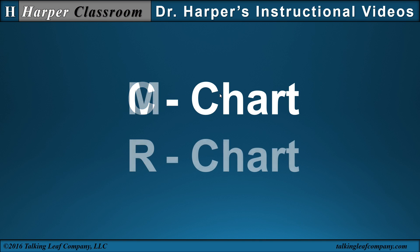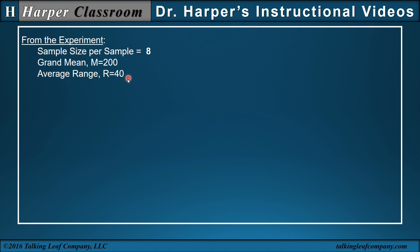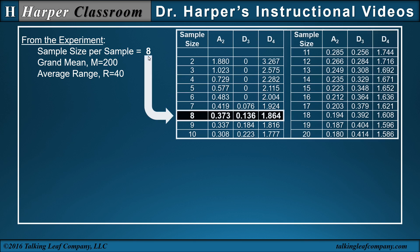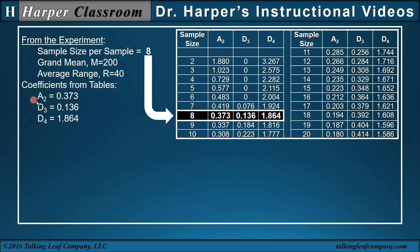Now let's consider the M-chart and R-chart. From the experiment, the sample size per sample is 8, the grand mean is 200, and the average range is 40. The sample size per sample is used in a standard industry table to determine the coefficients A2, D3, and D4. For a sample size of 8, A2 is 0.373, D3 is 0.136, and D4 is 1.864.